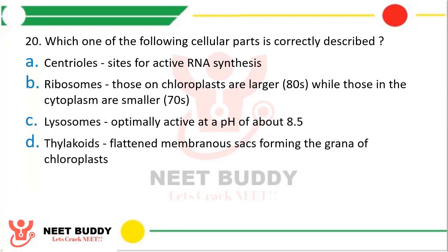Question number 20: Which one of the following cellular parts is correctly described? Option A: Centrioles — site of active RNA synthesis. Option B: Ribosomes — those on chloroplast are larger while those on cytoplasm are smaller. Option C: Lysosome — optimally active at pH of about 8.5. Option D: Thylakoids — flattened membrane sacs forming grana of the chloroplast. The correct answer is Option D; thylakoids are the flattened membrane sacs forming the grana of the chloroplast.